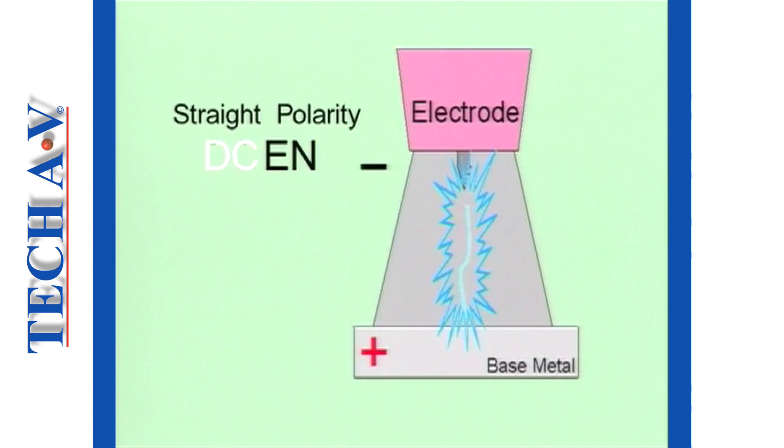In this configuration, the electrons move across the gap from the negative electrode and into the positive base metal. The gas ions, being positively charged, move in the opposite direction to the electrode.